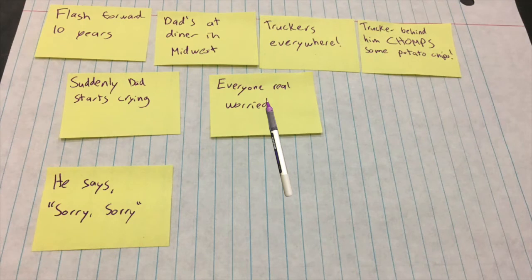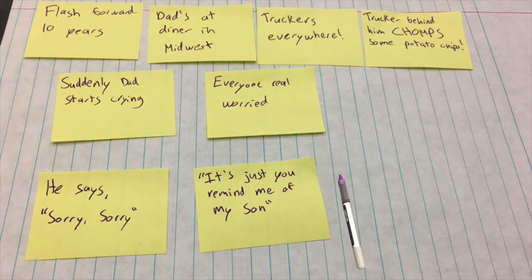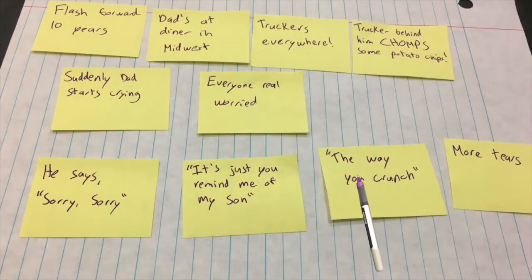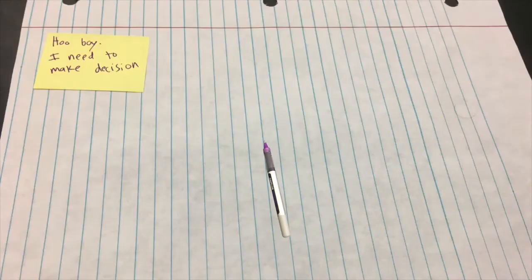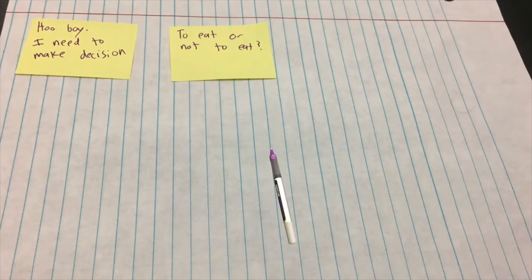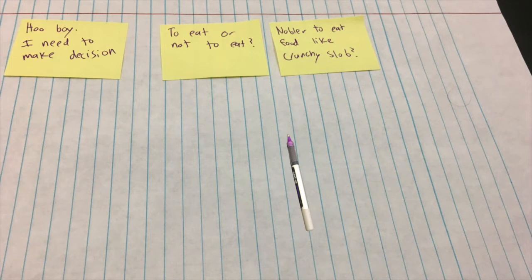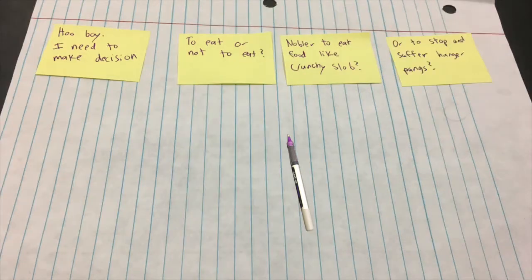He says, sorry, sorry. I bet at the end of this is going to be like, oh no, I missed my lunch break. Or something. It's just you remind me of my son. The way you crunch. More tears. Hoo boy. I need to make decision. To eat or not to eat. Nobler to eat food like crunchy slob. Or stop and suffer hunger pangs.